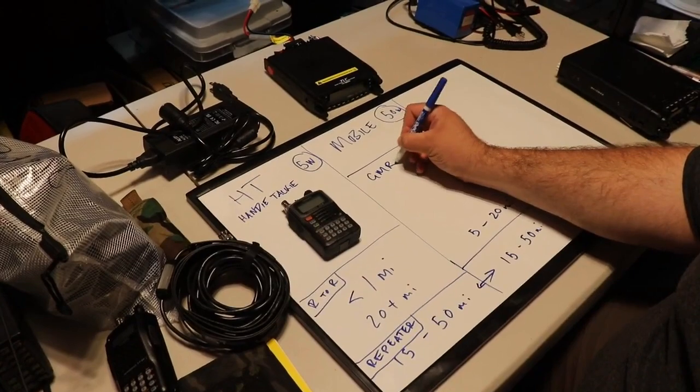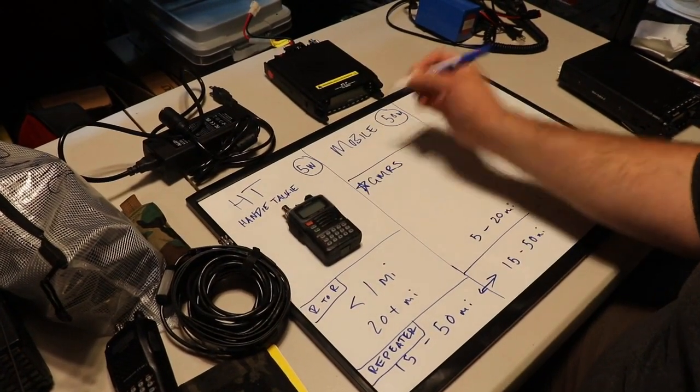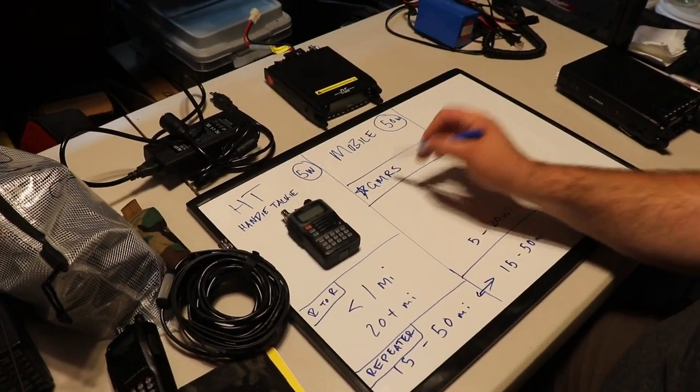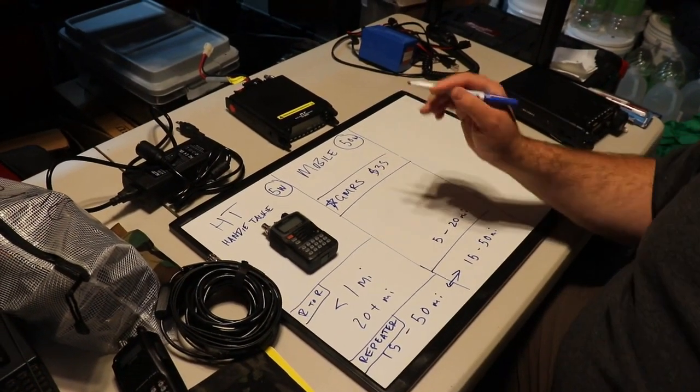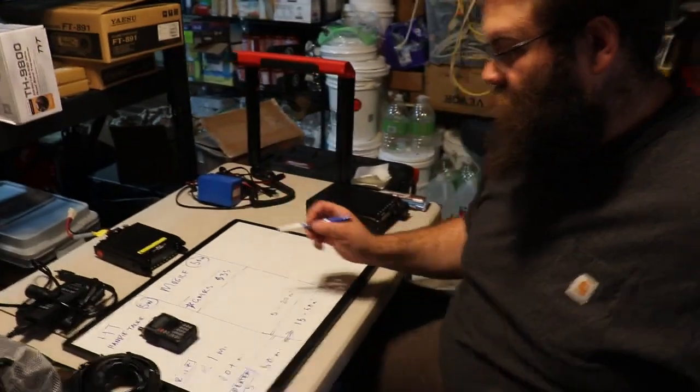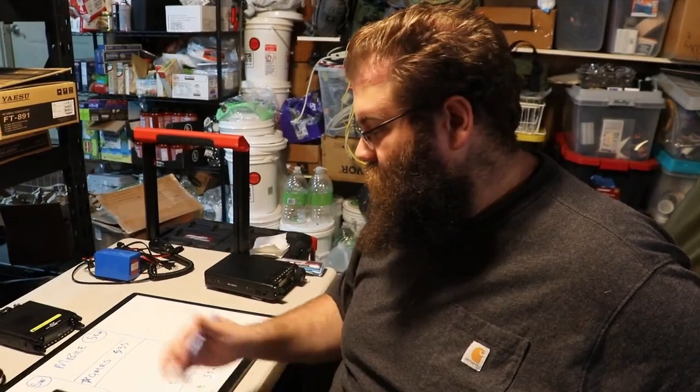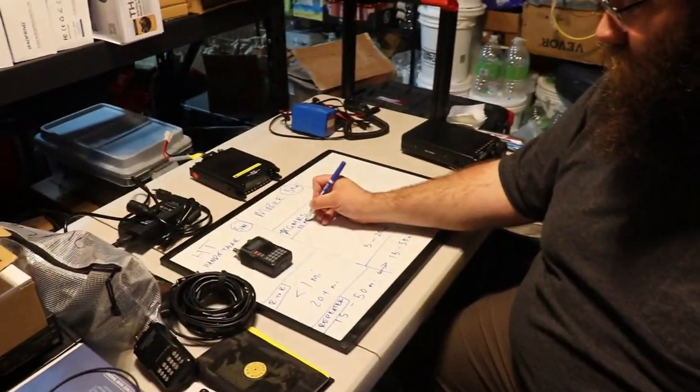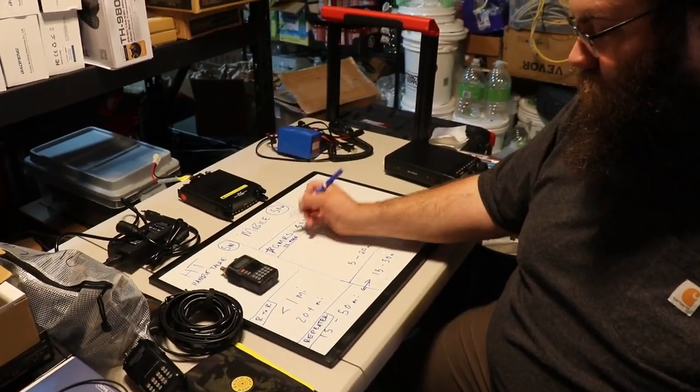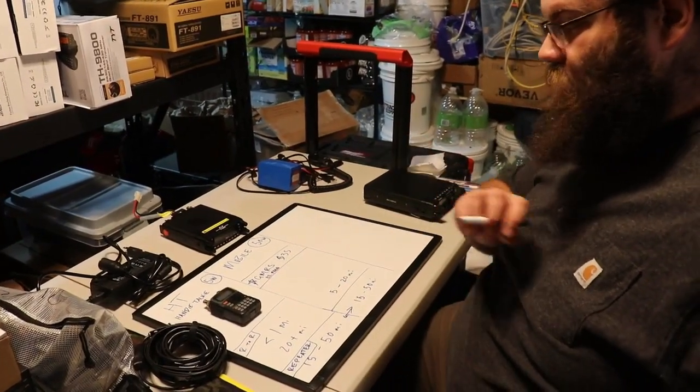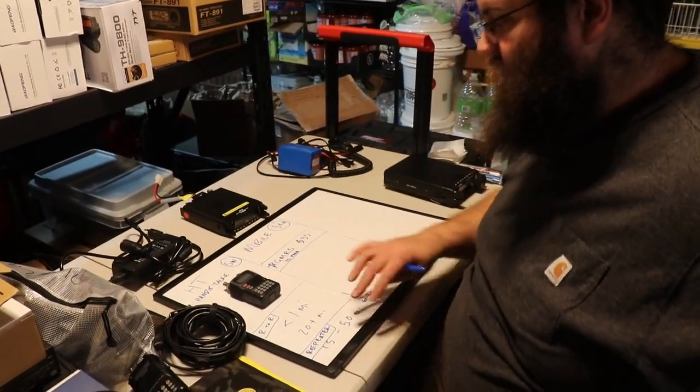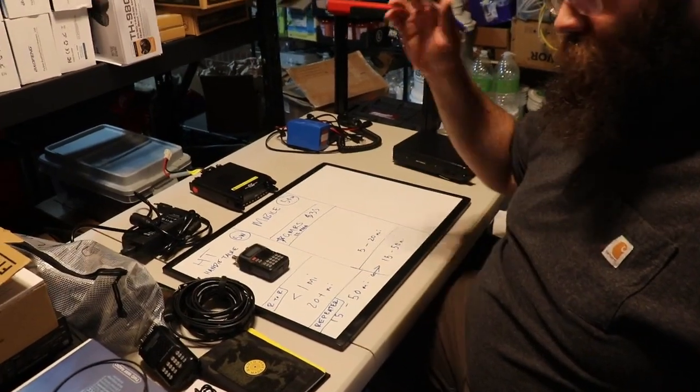You got GMRS. This is my recommendation that all people get GMRS licenses. They're $35. There's no test. You just go to the FCC website. We have a guide on our website of how to get there and you get 22 frequencies that you can use with that license that covers your whole family. You can legally use that all day long on both of these types of setups and you're home free.